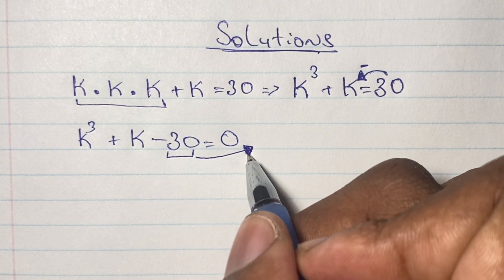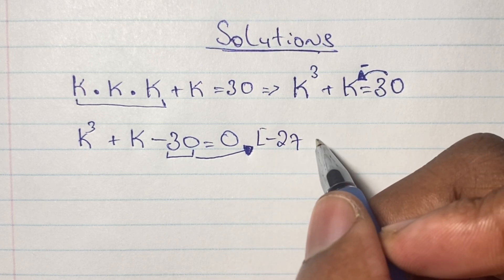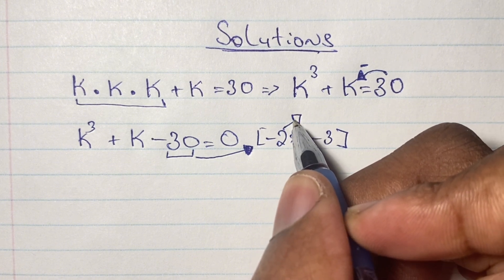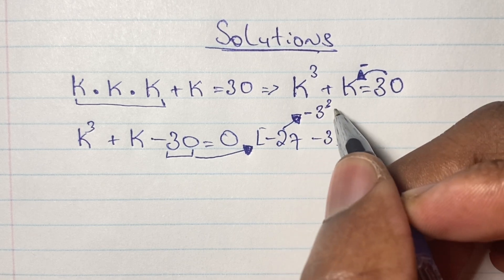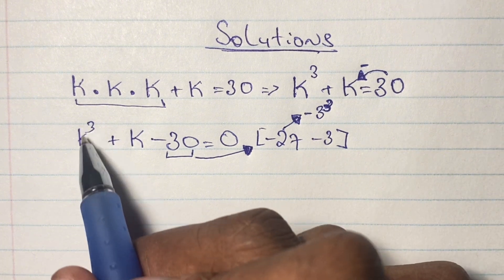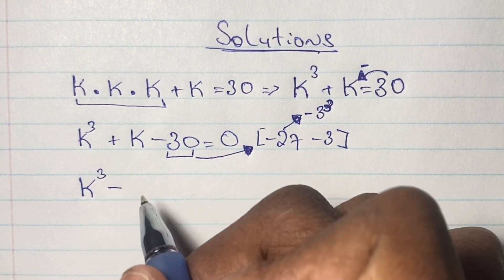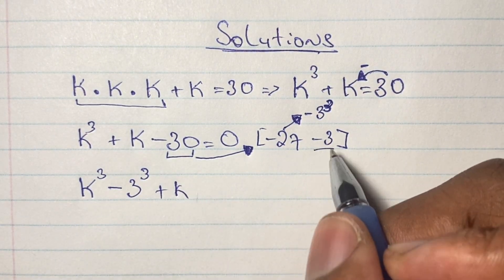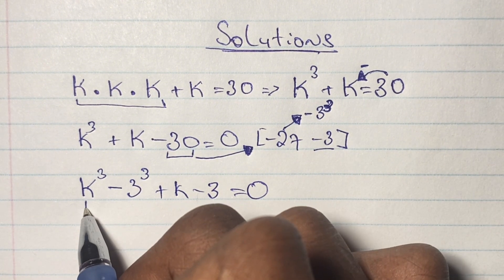From here, we take negative 30 and simplify it as negative 27 minus 3. We use negative 27 because 27 is a cubic number — specifically 3 to the power of 3, or 3 cubed. We plug that into our equation, giving us k³ minus 3³ plus k minus 3 equals zero.